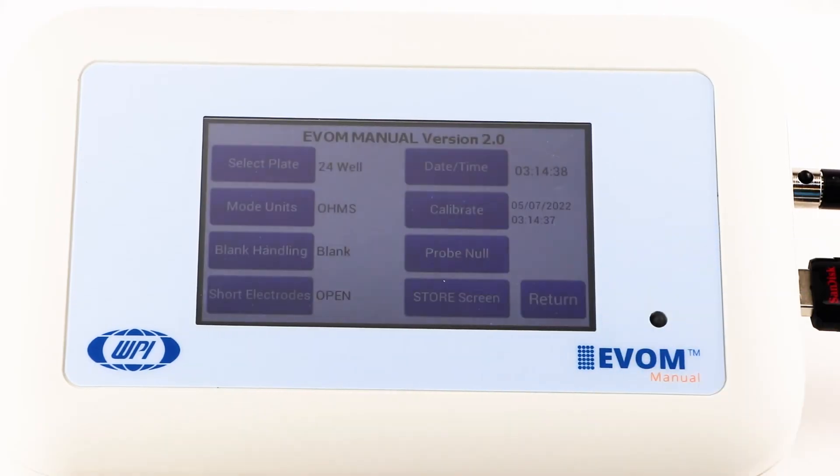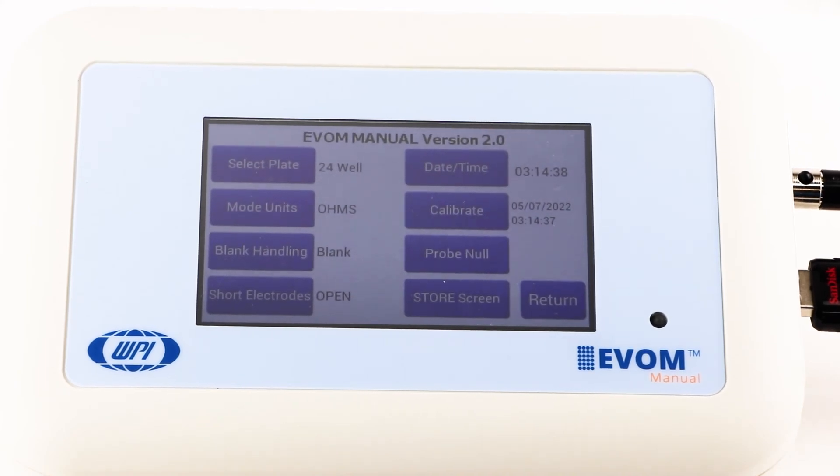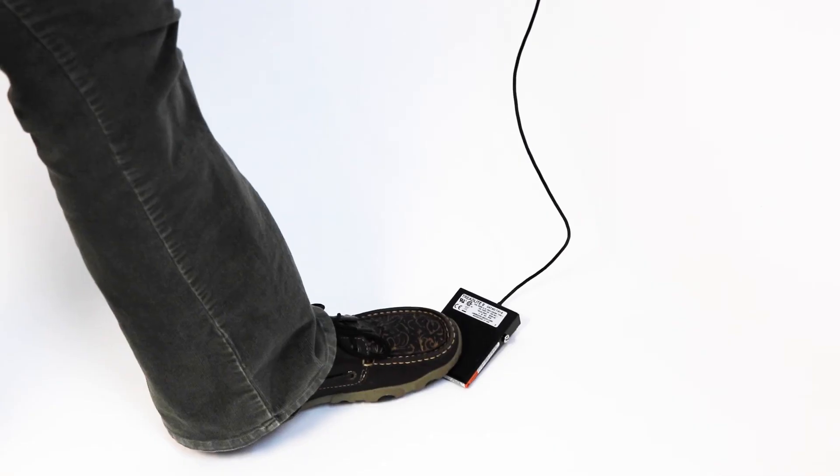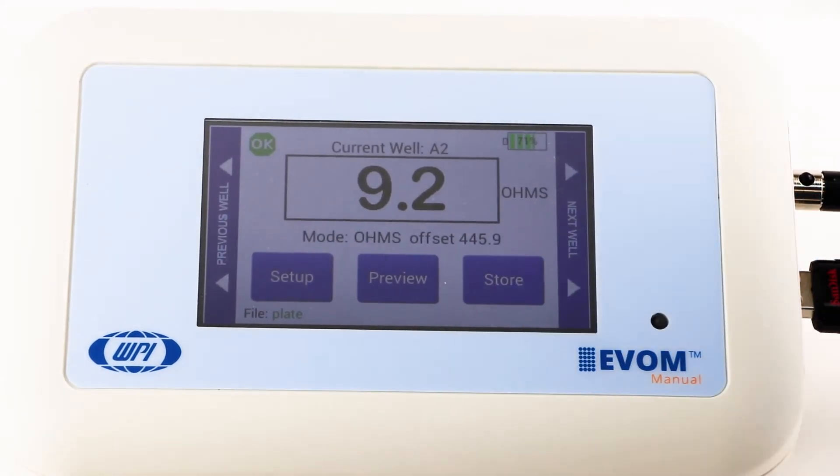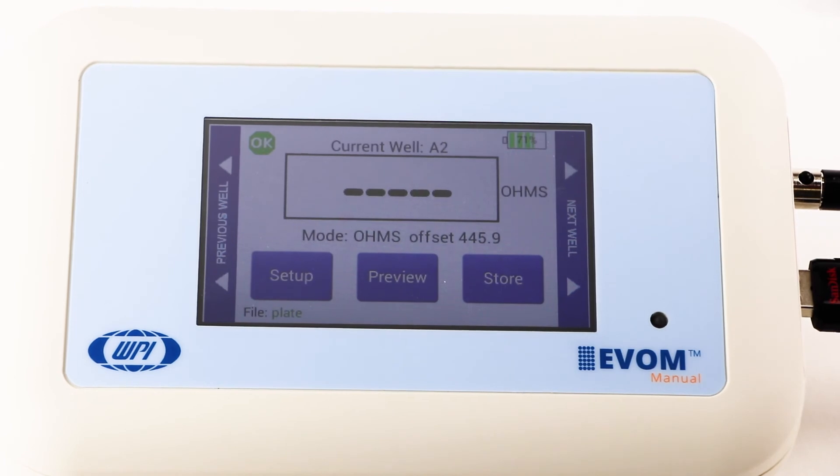Press return to navigate back to the main menu. Now you can begin measuring by pressing the foot switch, or simply touch the store button on the screen. Repeat the sampling process with each well.